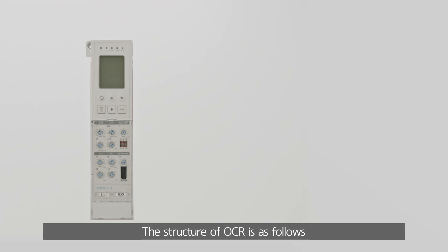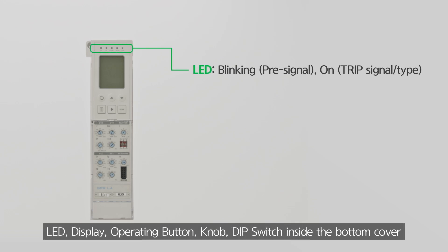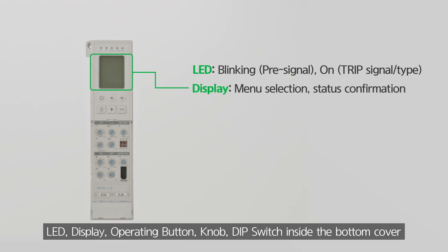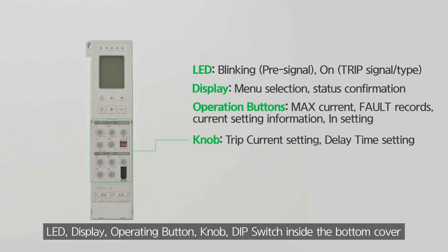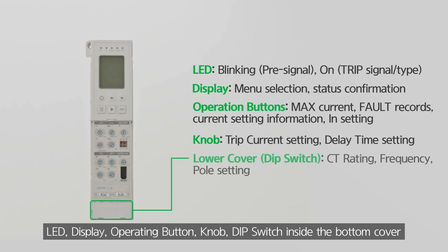The structure of the OCR is as follows: LED, Display, Operating button, Knob, and Dip switch inside the bottom cover.